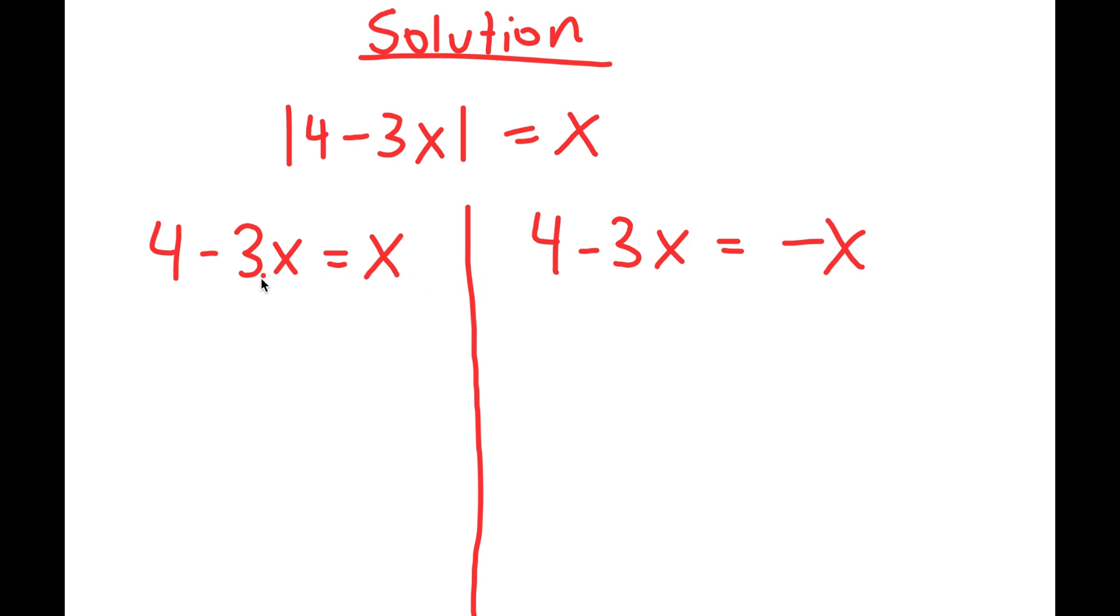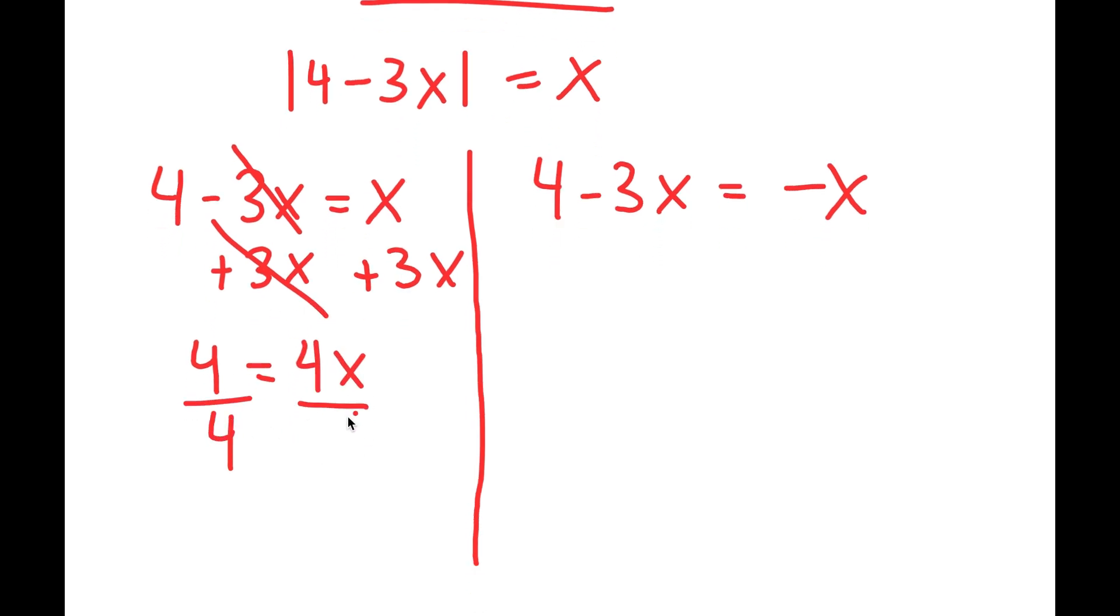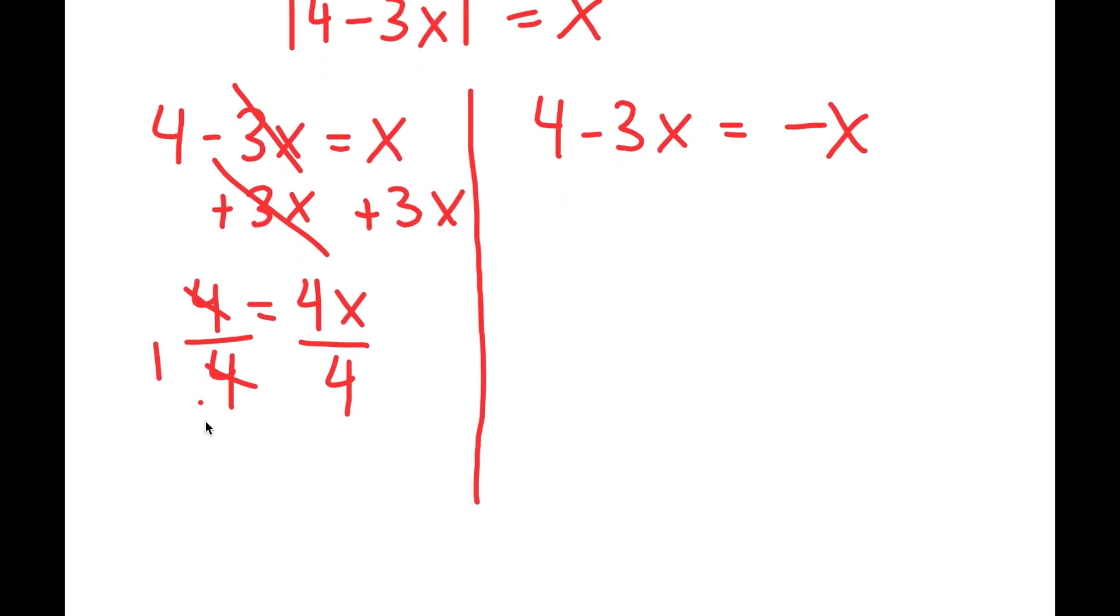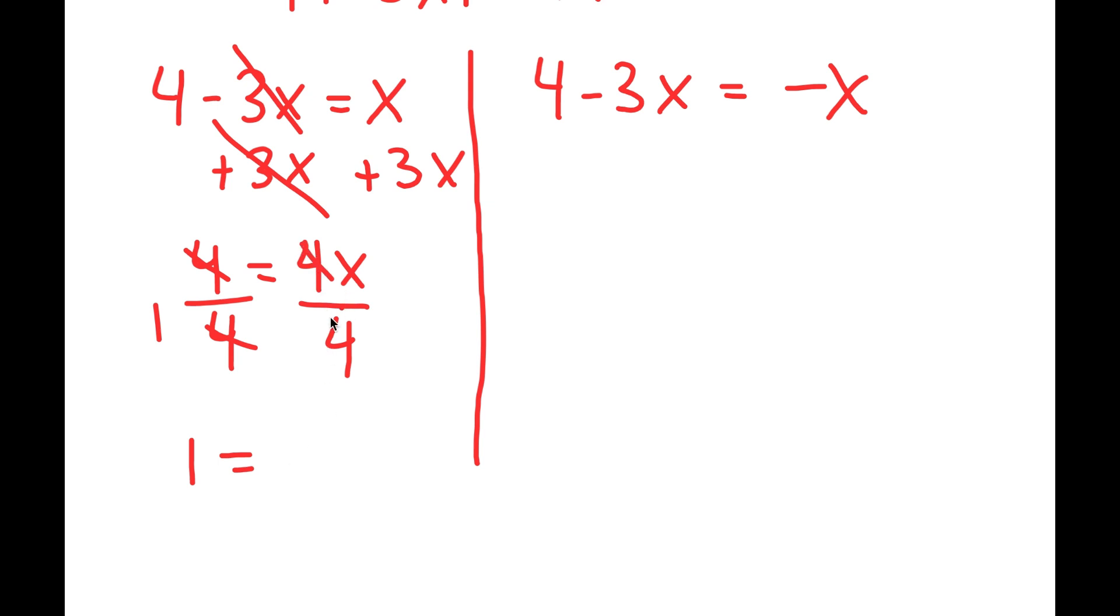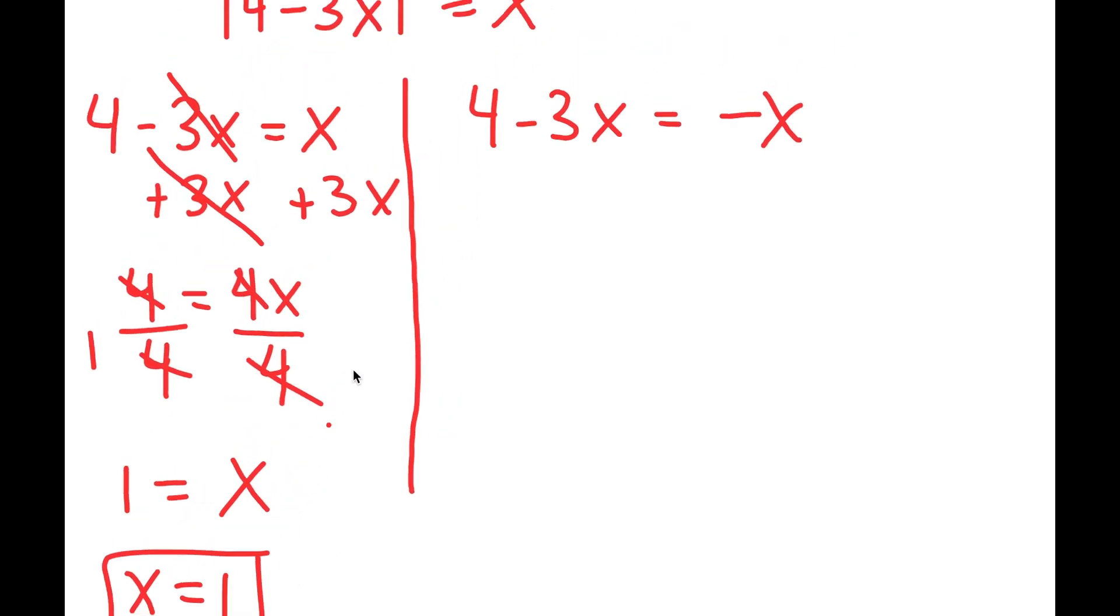So 4 minus 3x equals x. Let's go ahead and solve this one first. I'm going to add 3x on both sides, so I get 4 equals 4x. Now if I divide both sides by 4, these two cancel out and I get 1 equals x. So x equals 1. This is my first solution.